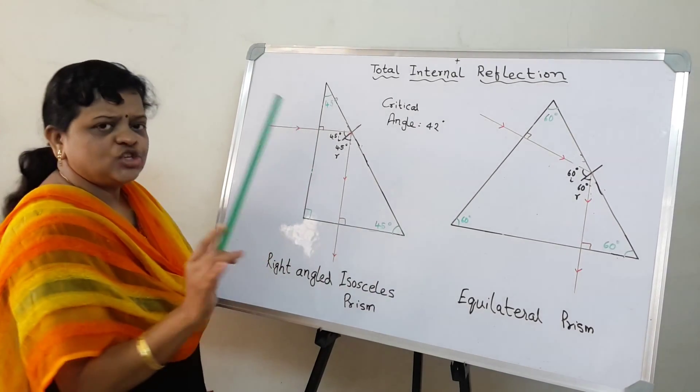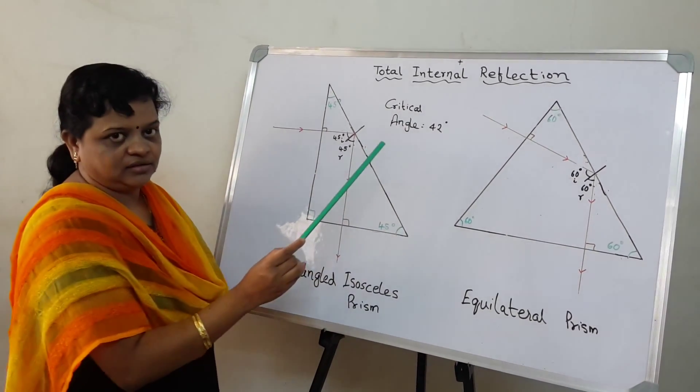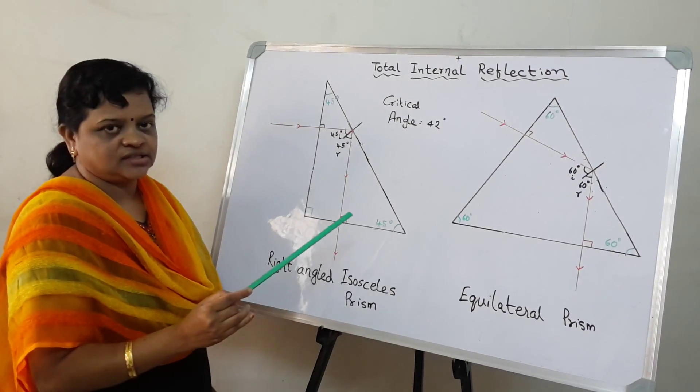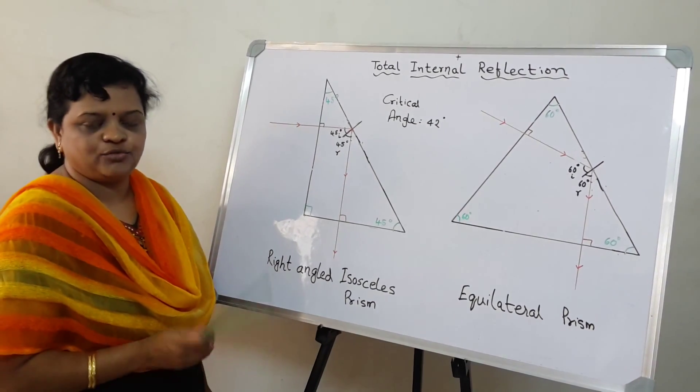Now just remember that the critical angle for the glass-air interface is 42 degrees for a glass prism.